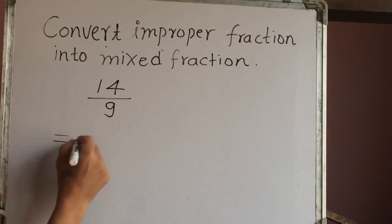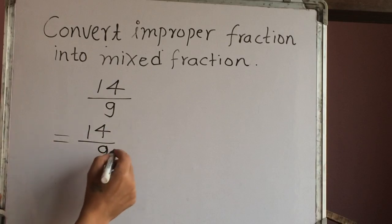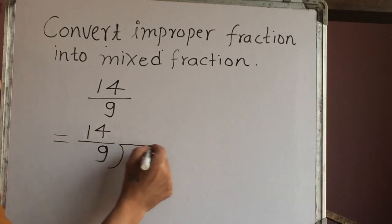First we have to write the same fraction here, 14 out of 9. Then we have to make one division house here. Let's write the numerator here.